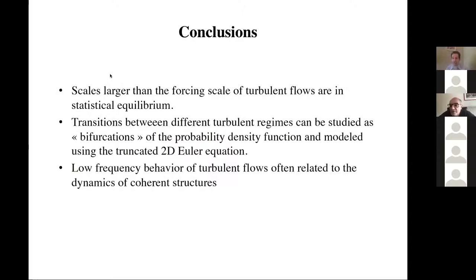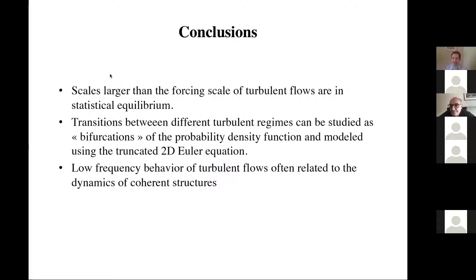Follow-up: so there is some kind of non-local interaction between the inertial range and the large scales at high Reynolds number. Response: Yes — the fluctuations at large scales are related to strongly non-local triadic interactions where two wave vectors close together in the inertial scale non-linearly excite a very small wave vector at large scale.